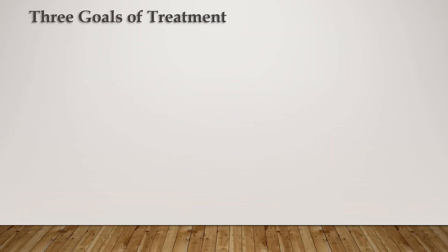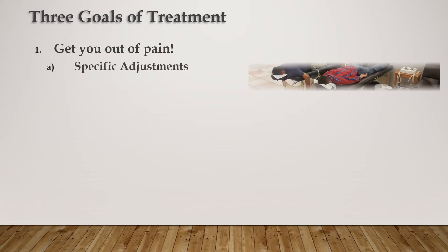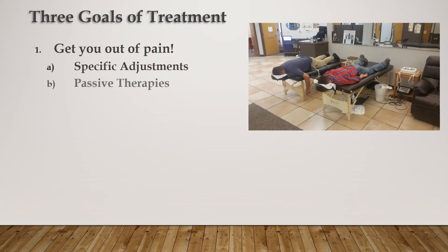There are three goals of treatment for all patients who enter our office. The first goal is to get you out of pain. To do that, we will be using specific chiropractic adjustments to the spine or extremities to remove pressure off affected nerves. We may also incorporate passive therapies, which may include electrical muscle stimulation, heat or ice, laser therapy, or even massage therapy. These are designed to decrease muscle spasms and reduce inflammation in the body so that the adjustments stay in place better.